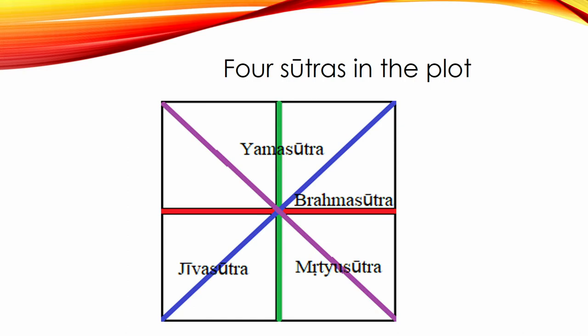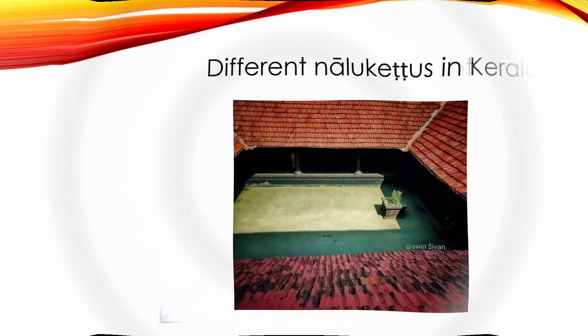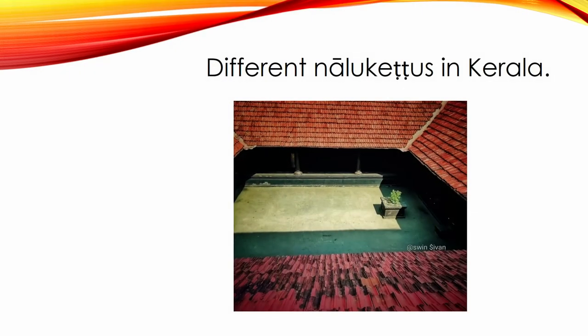Nalukat is a typical traditional homestead of old Kerala, called Tharavad, where most joint families lived together under one roof. The traditional architecture is typically a rectangular structure where four halls are joined together with a central courtyard open to the sky.